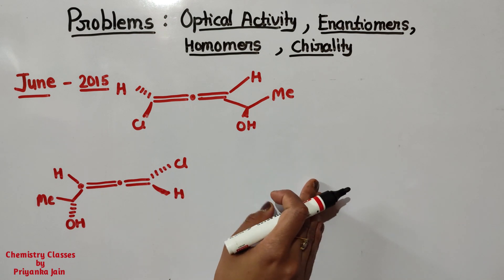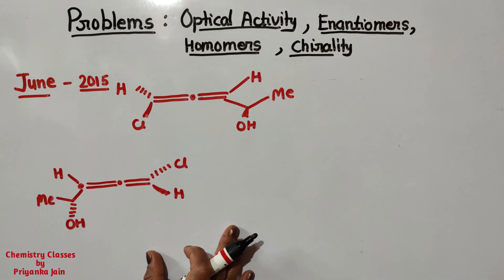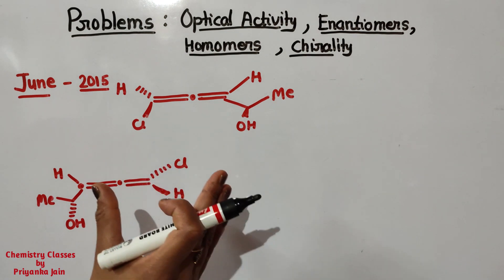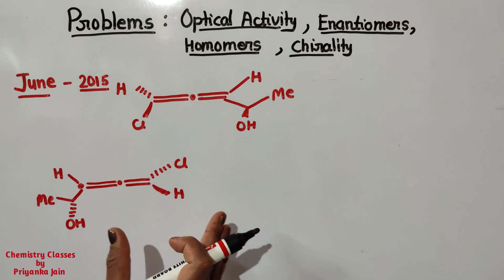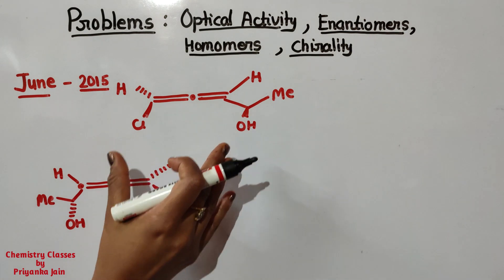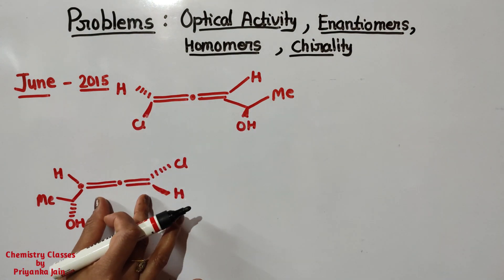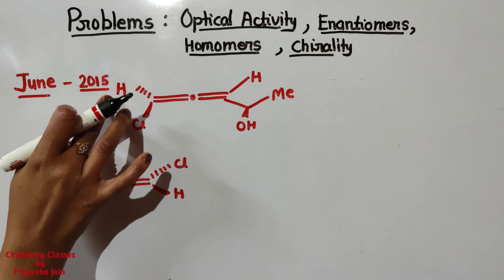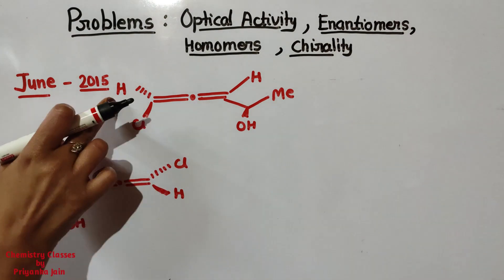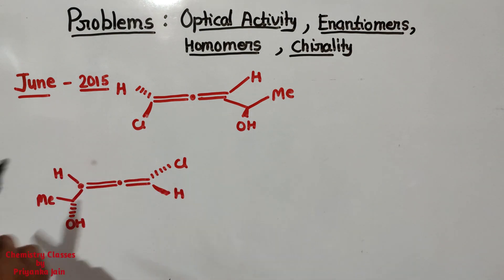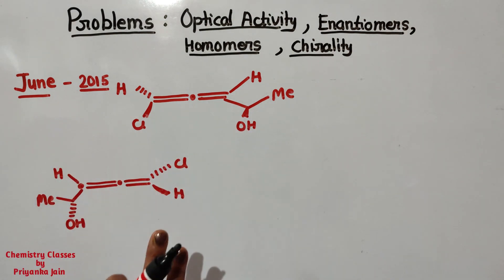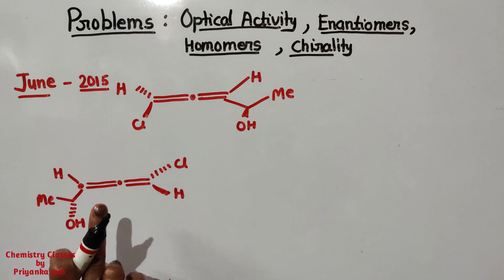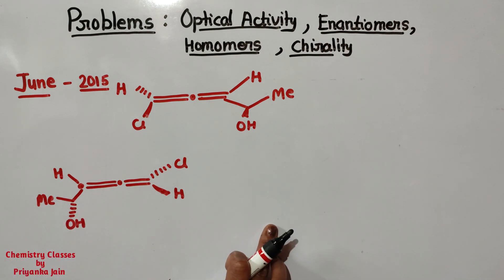We have given two structures and we have to identify whether they are enantiomers, diastereomers, homomers, or constitutional isomers. These are structures of allenes. Allenes with an even number of double bonds are generally optically active when the two groups attached at the same end are different. When these two groups are different, they are optically active — it means these should be enantiomers.